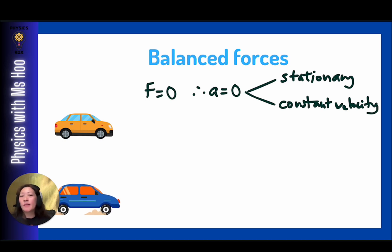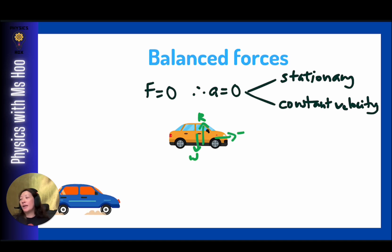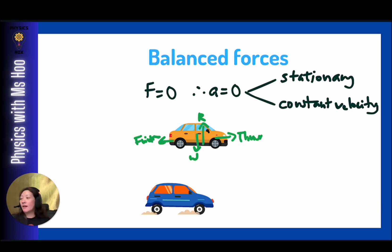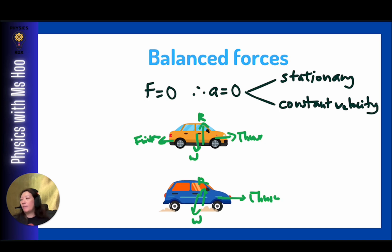Never assume that because forces are balanced, the object is not moving. If a car is stationary, the forces are balanced — weight equals normal reaction. But a car moving with constant velocity is also a balanced force situation. Observing the horizontal forces, the thrust forward is balanced by friction and air resistance, meaning the forward forces equal the backward forces.